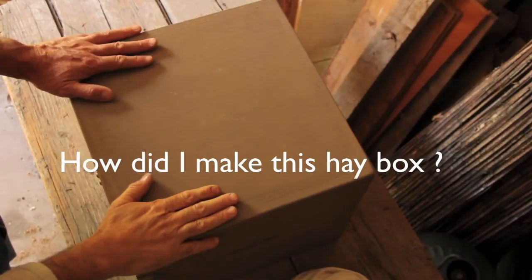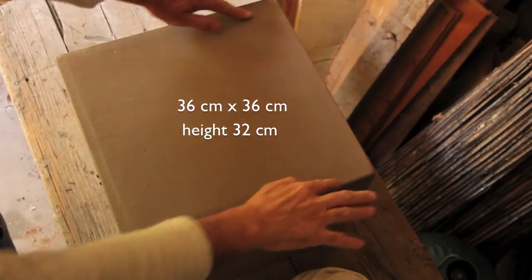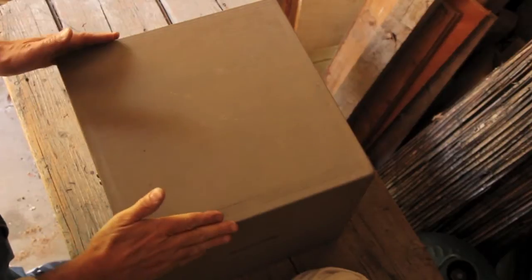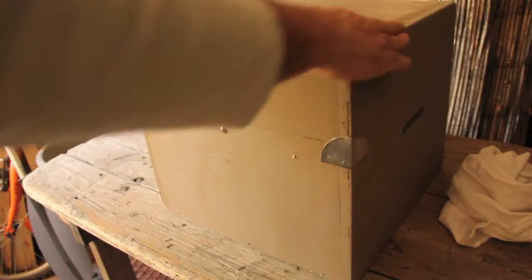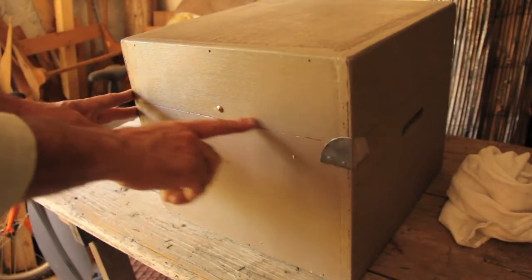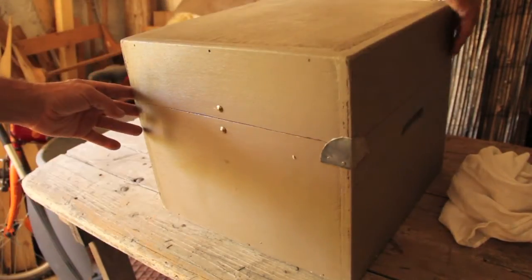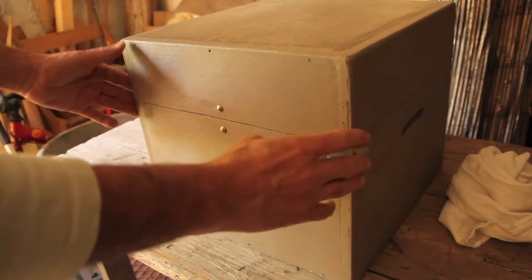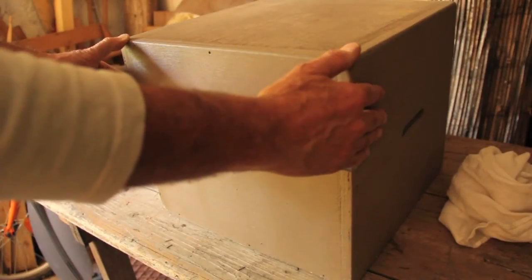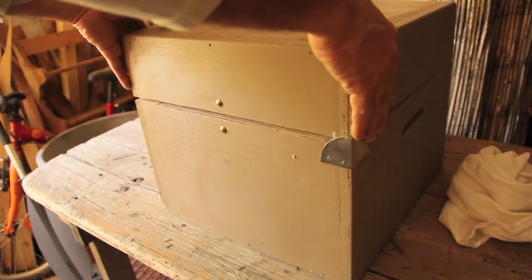How did I make this hay box? First of all, I constructed a box. I actually made a cube out of plywood. After constructing this cube, this box, which was all one piece, I drew a line around the whole box and, using a jigsaw, cut out a line so that there would be a perfect seal to the hay box.